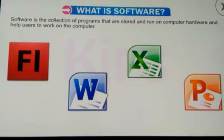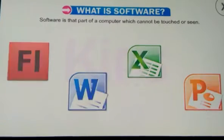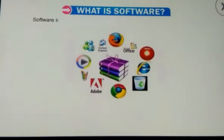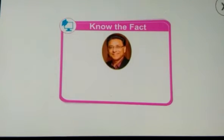Software is that part of a computer which cannot be touched or seen. Hardware versus software — which do you think is more important? Software is of two types: system software and application software.